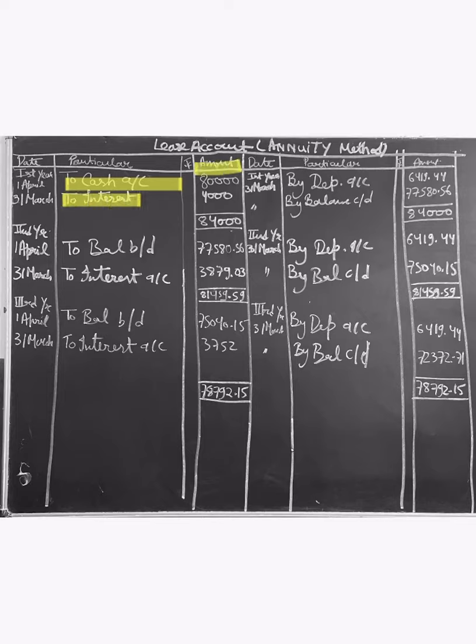Then to interest, 4,000. In this question, dates were not mentioned, so we have assumed April 1st to March 31st and haven't taken any specific year. We are just writing first year, second year, and third year. First year, March 31st: to cash account 80,000 for purchasing the lease.